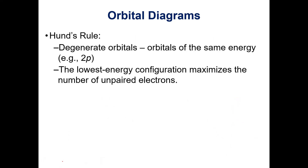Hund's rule tells us that degenerate orbitals — orbitals of the same energy — when filling electrons into degenerate orbitals, the lowest energy configuration maximizes the number of unpaired electrons.